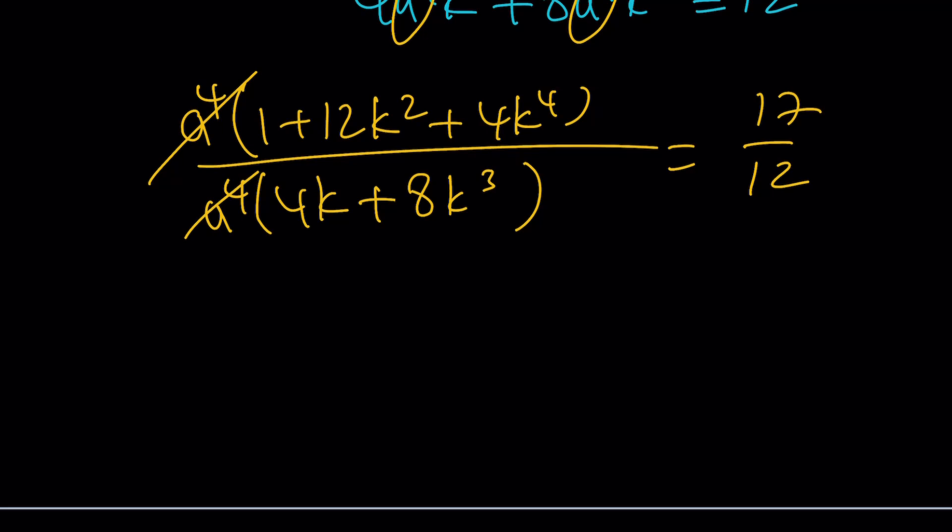And after cross-multiplying and putting this together, you're going to end up with an equation like this. Of course, you're going to get higher numbers, like 17 times 4 is going to give you 68. But everything here is going to be a multiple of 4 because of these 4 and 8 and because of the 12 here. I could actually take care of that by taking out a 4 here and canceling out. But after you simplify everything, you're going to end up with 12k to the 4th minus 34k cubed plus 36k squared minus 17k plus 3 equals 0.